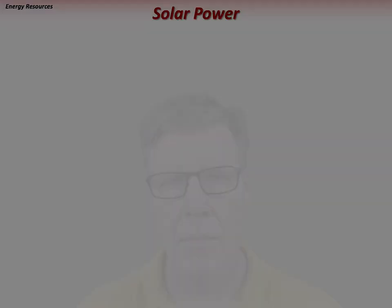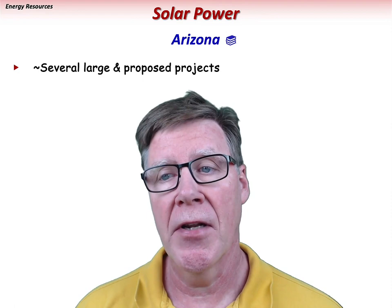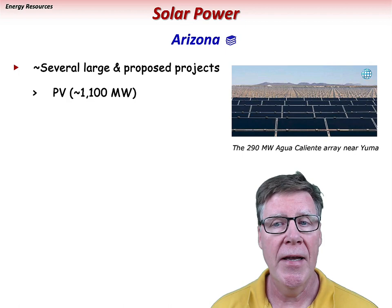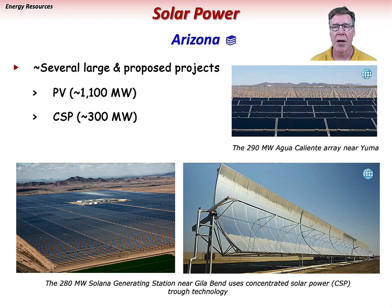In Arizona, there are several large solar projects that are either existing or proposed. PV accounts for roughly 1,100 megawatts, including the 290-megawatt Agua Caliente PV array near Yuma. Concentrated solar power accounts for about 300 megawatts, with much of it coming from the 280-megawatt Solana generating station near Gila Bend.